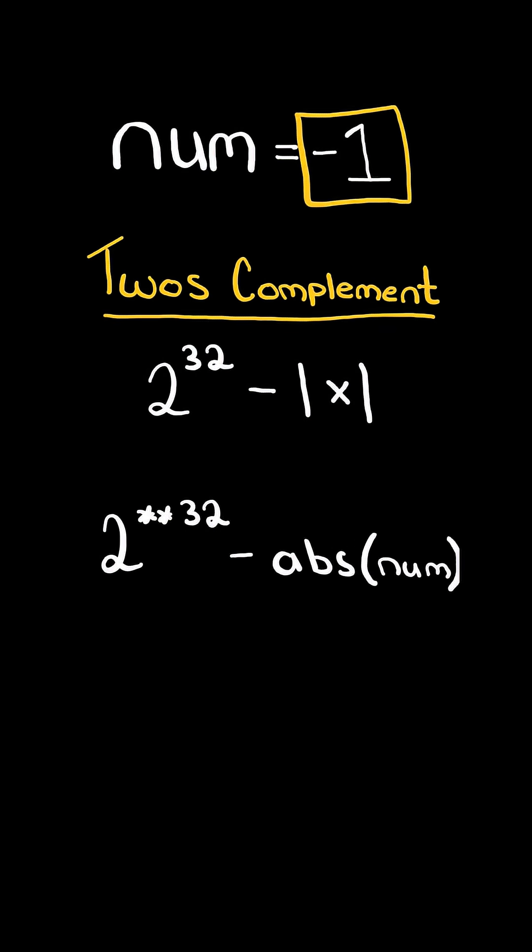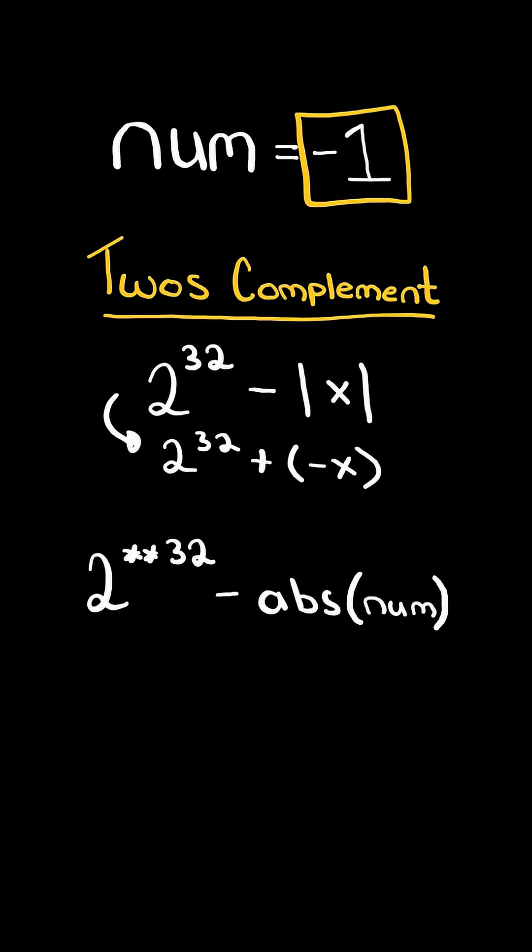So in Python, the formula would be 2 to the power of 32 minus the absolute value of num. But since we know num is already a negative number, we can simplify the 2's complement. So in Python, this formula simplifies to 2 to the 32 plus num.